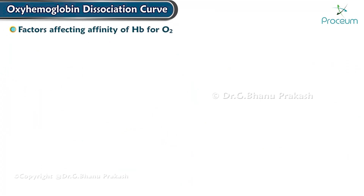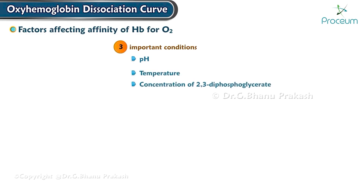Three important conditions affect the oxygen-hemoglobin dissociation curve: the pH, the temperature, and the concentration of 2,3-diphosphoglycerate.